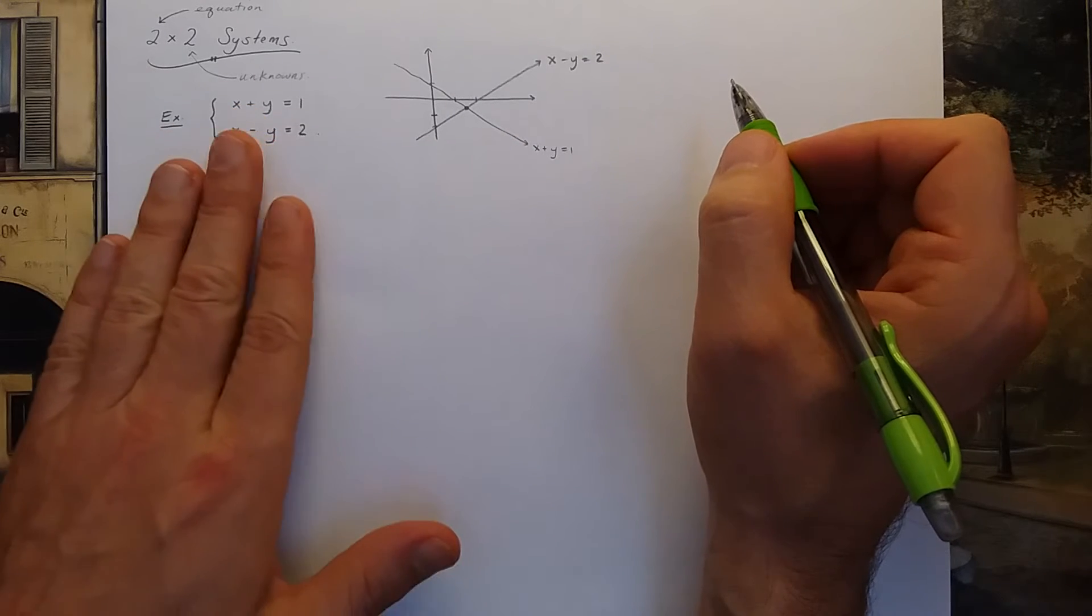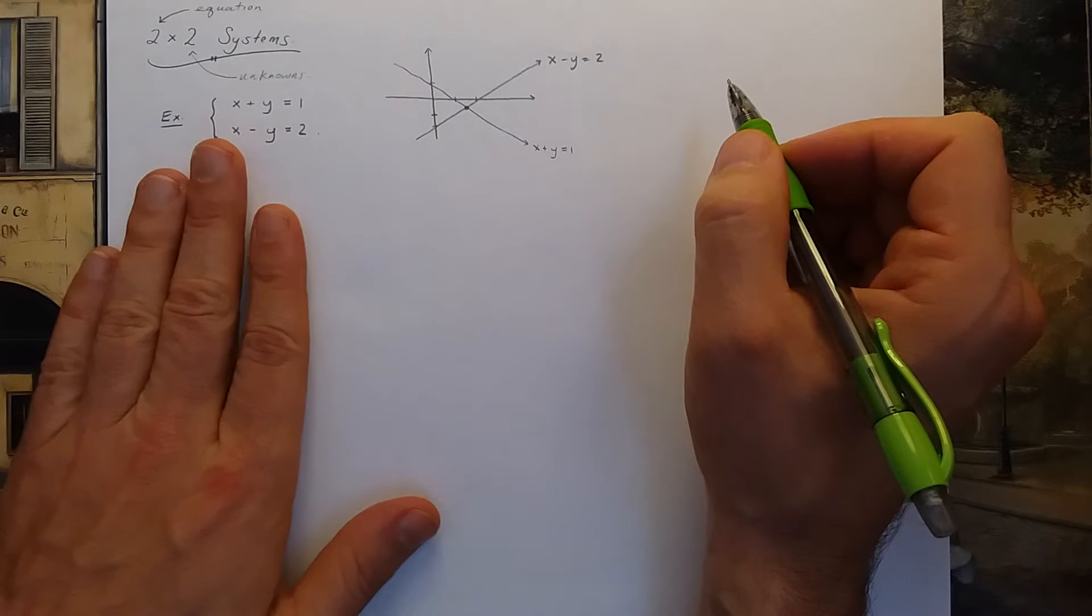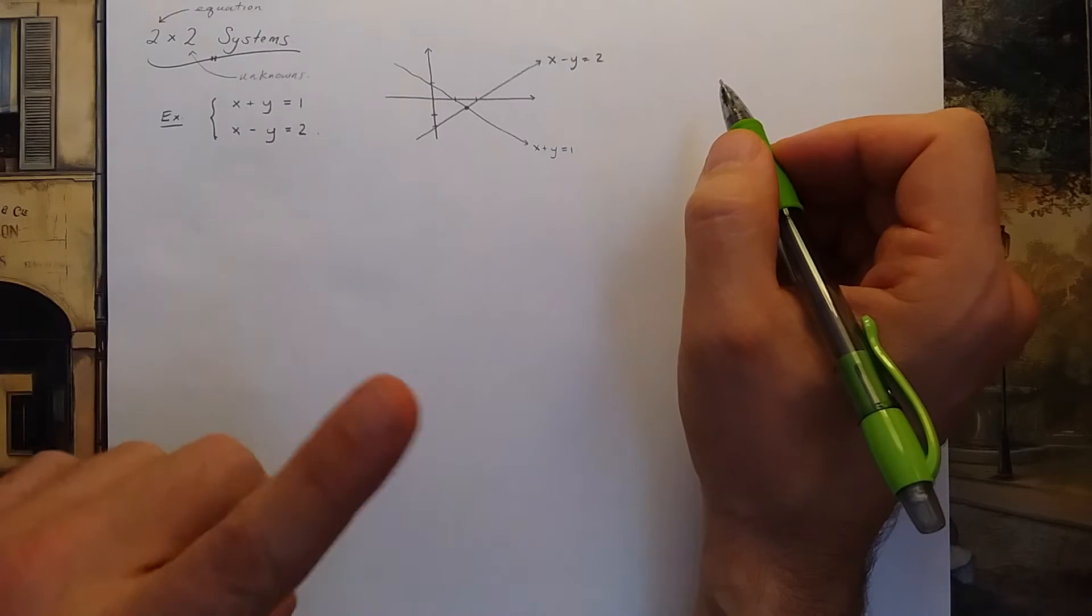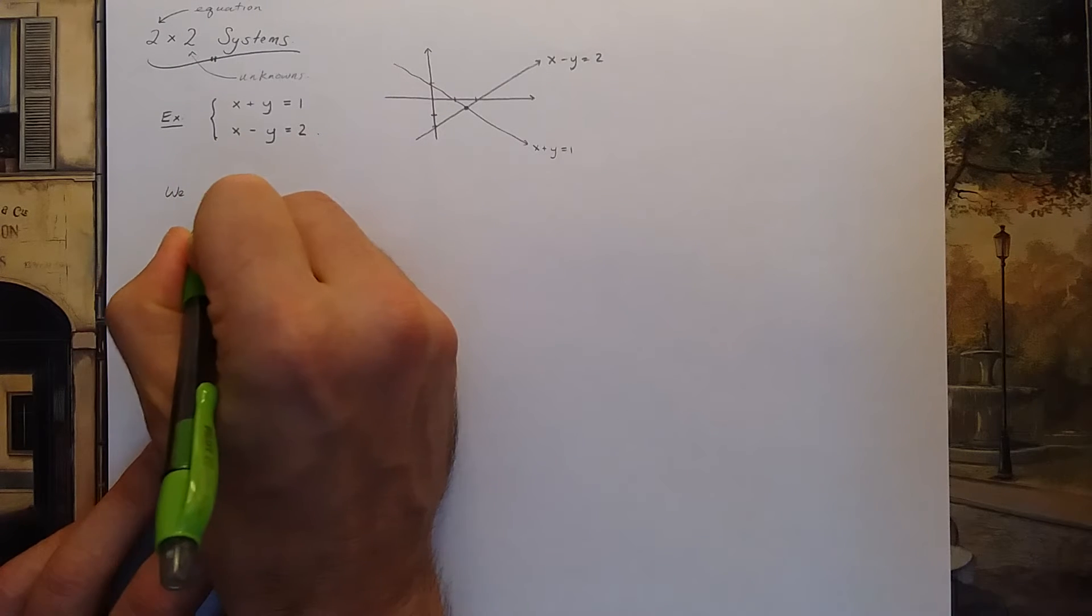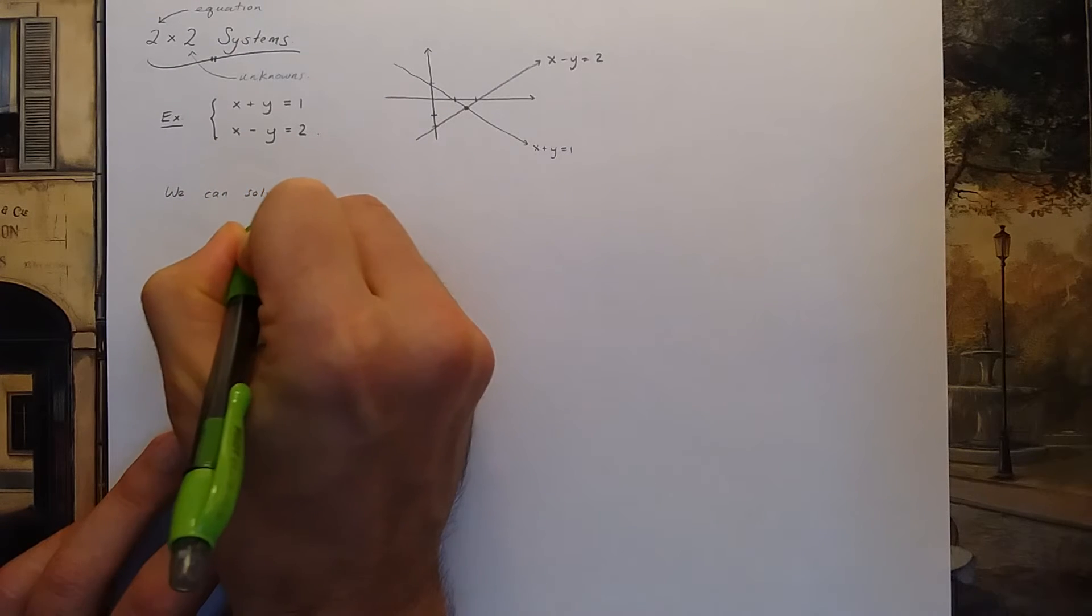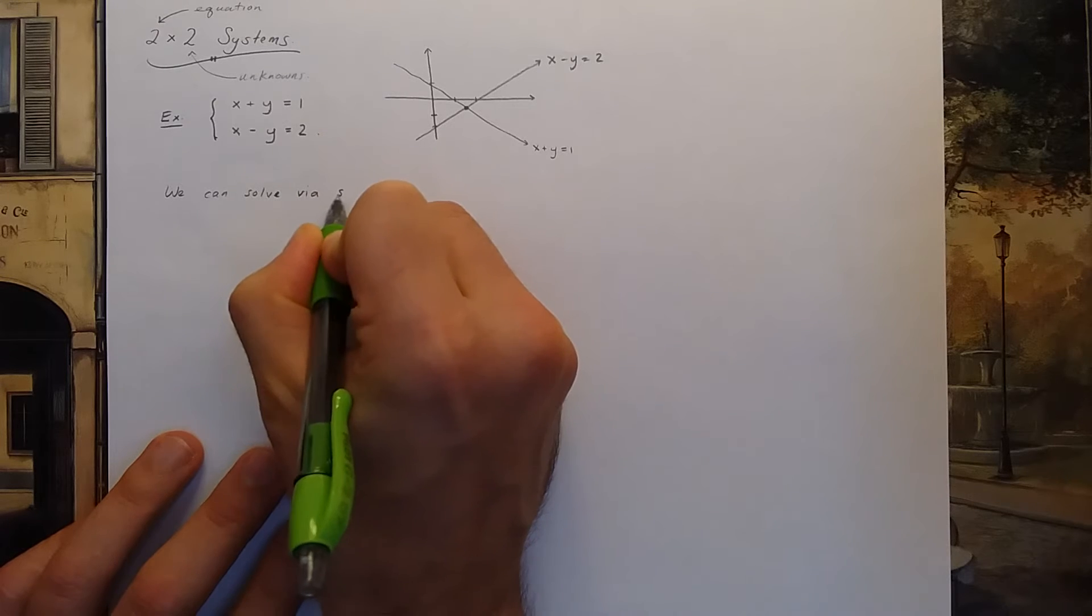There are a couple of methods that you can use to solve 2x2 linear systems. The first is known as the substitution method. So we can solve via substitution.